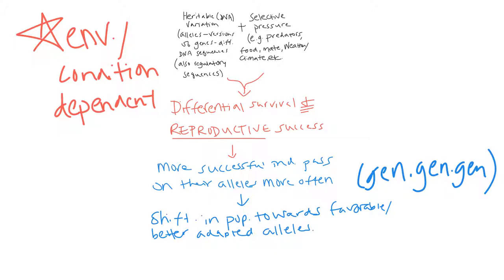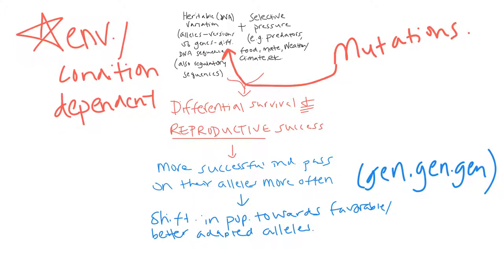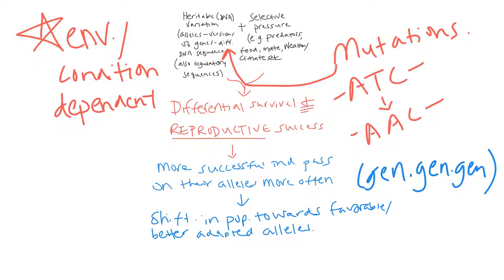This variation arises because of mutations. Mutations are just mistakes in DNA replication that result in different DNA sequences. For example, in the original organism the DNA might have a sequence ATC, and then when it gets copied, by accident it becomes AAC. So the AAC version can get passed on to offspring, and maybe that leads to a different kind of phenotype.